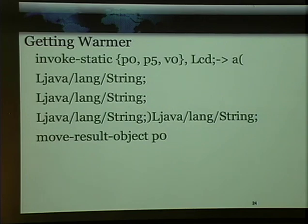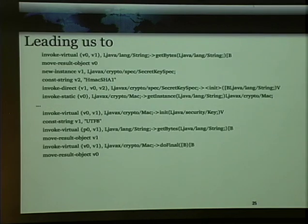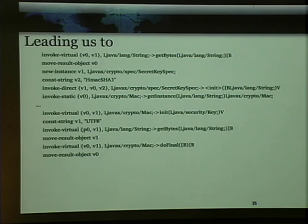So it's probably, just thinking from where we're reversing, going to be a key, maybe another key, and whatever the parameters we're signing are. This leads us into where the crypto happens. You see the functions being called — it gets bytes from a string, gets a crypto secret key spec, you see it's calling HMAC-SHA-1. This is building it up, but it's still kind of tough to understand if you've never done crypto in Java and you're not a Java guy.